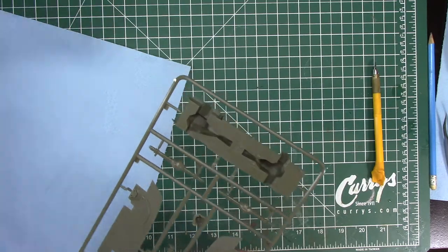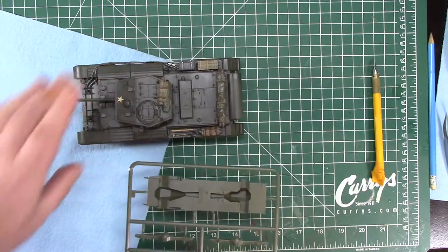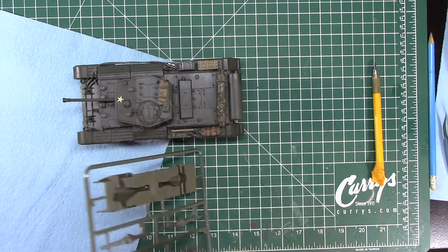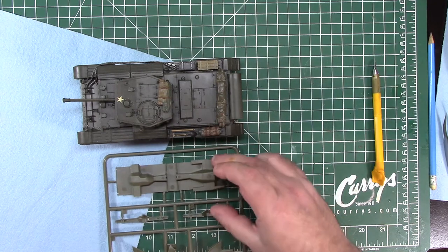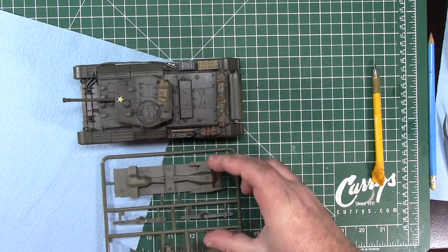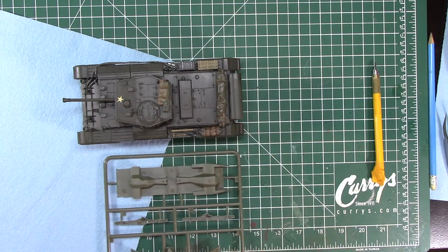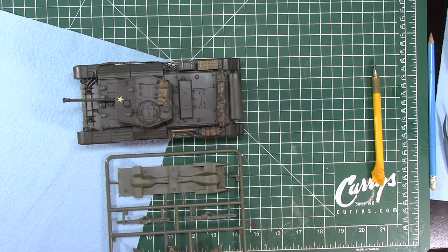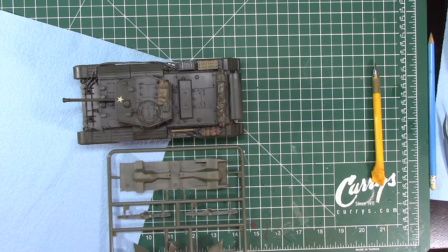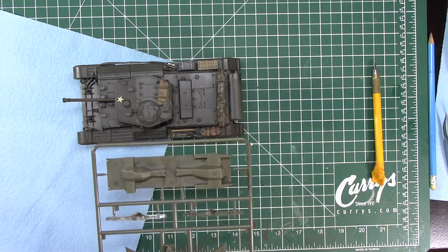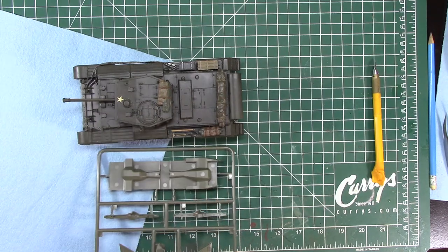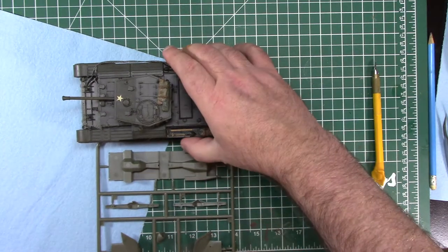Again to give you an idea of the size, out comes the Cromwell. Now this thing flares out from the base, the sides are actually angled out so it's a little bit wider than this, and it's a tall vehicle, the wheels on it are huge, so it's probably going to end up about the same length and a little bit narrower than a Cromwell.